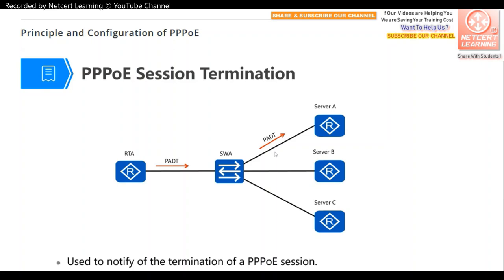For PPPoE session termination, when the client (Router A) wants to terminate the PPPoE session, it sends a PADT packet to the server indicating it wants to terminate. Once the server receives this packet, the session is terminated.